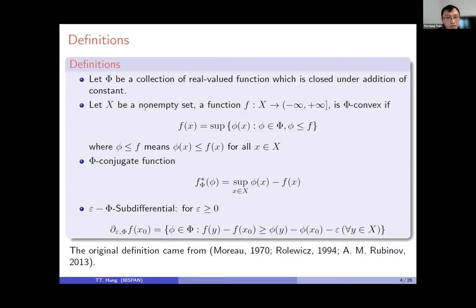We consider a class of elementary functions — real-valued functions closed under addition of constants. We take X to be a nonempty set. A function is phi-convex if it can be represented as the supremum of phi in the class smaller than f. We also introduce the phi-conjugate function, defined similarly to the classical convex conjugate, and the epsilon-subdifferential.